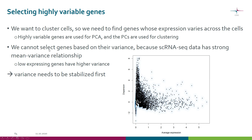We cannot just go and select genes based on their variance, because single cell RNA-seq data has a very strong mean-variance relationship. Here the black dots are genes. On the x-axis we have average gene expression — genes expressed at low level are on the left, and high expressors are on the right. On the y-axis we have dispersion of variance. As you can see, genes expressed at low level tend to have quite high variance. So if we just selected based on variance, we would end up picking all the low expressing genes, which would be biased.